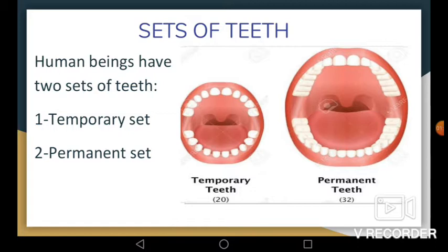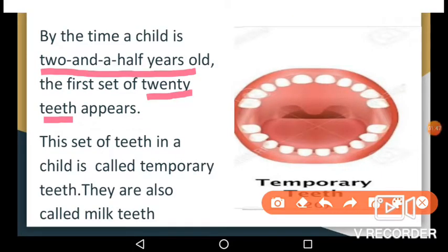We have all gone through this phase during our childhood — where we would lose a tooth and a new one would already be ready below it. As humans, we have two sets of teeth: temporary teeth and permanent teeth. The first set is called milk teeth, primary teeth, or baby teeth, and they start erupting when we are 6 months old. These teeth are very important for the normal growth and development of a child, in fact as important as your permanent teeth.